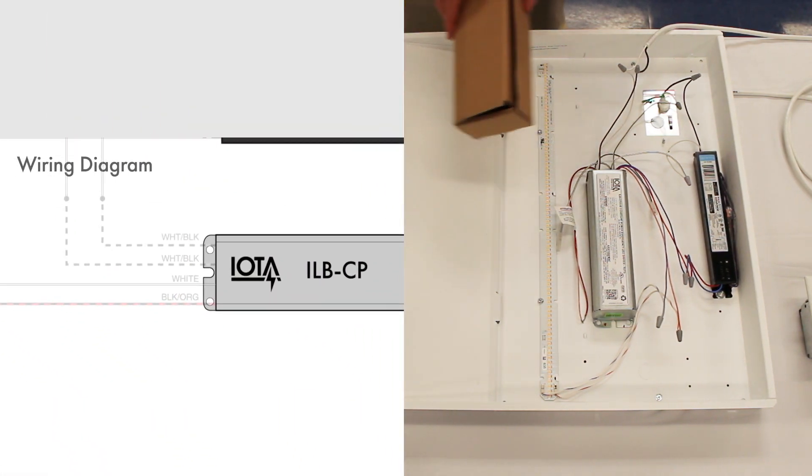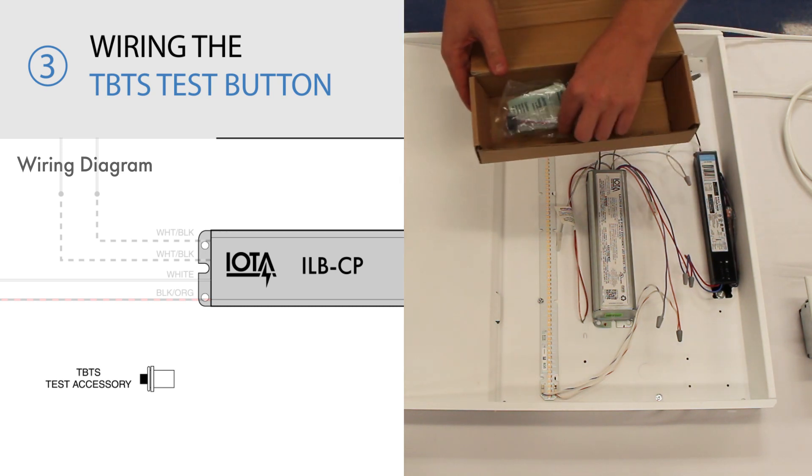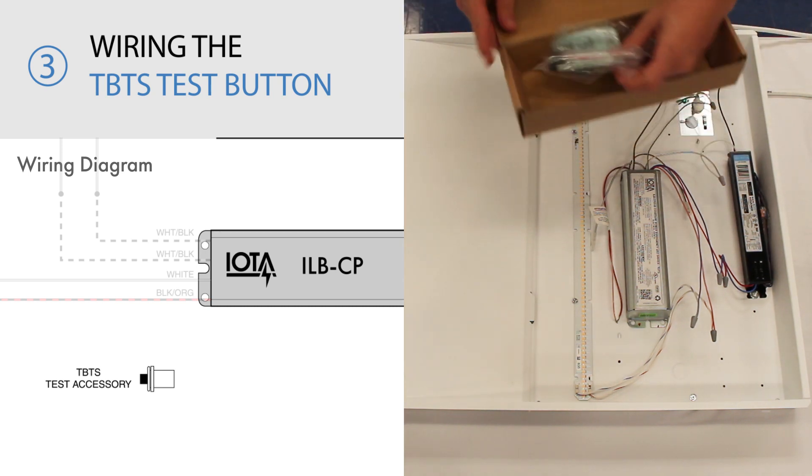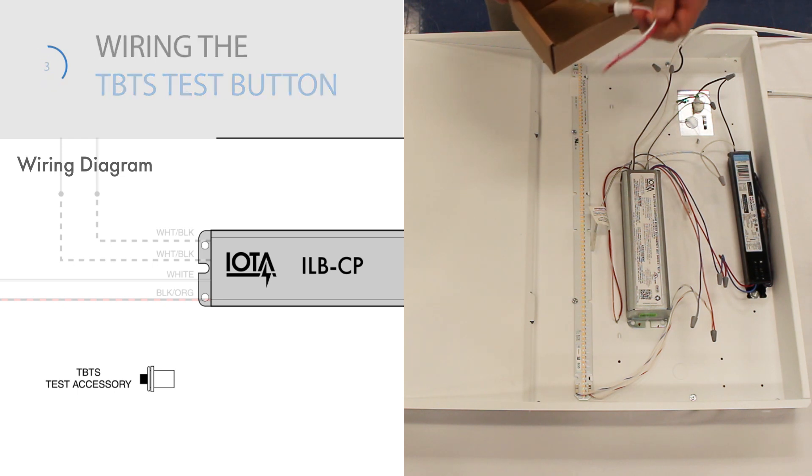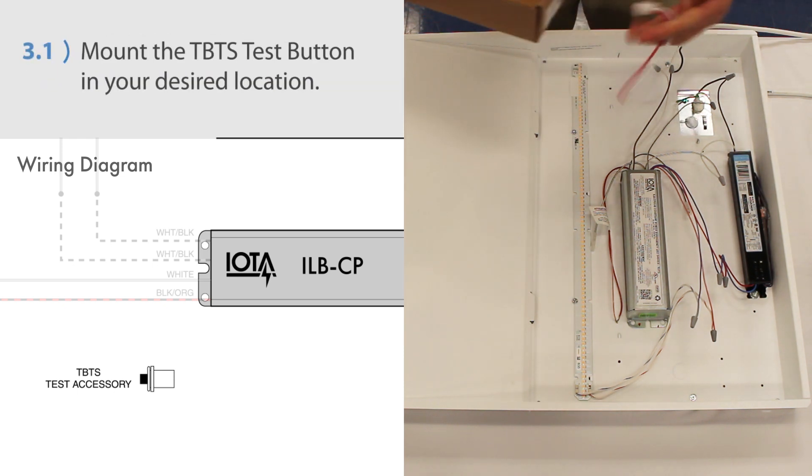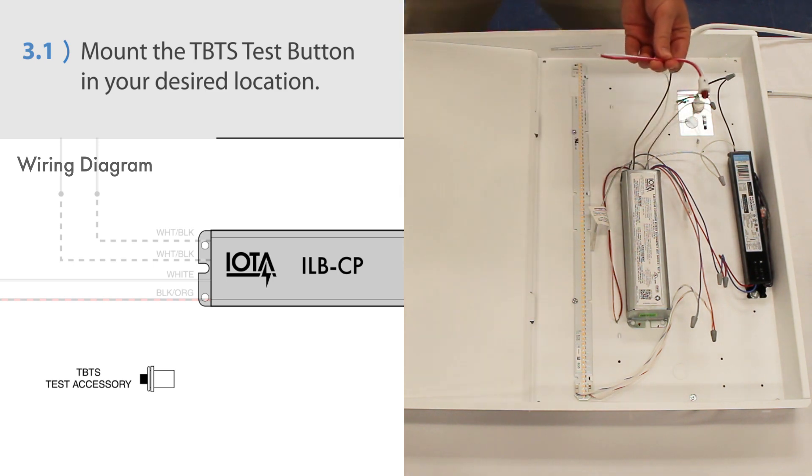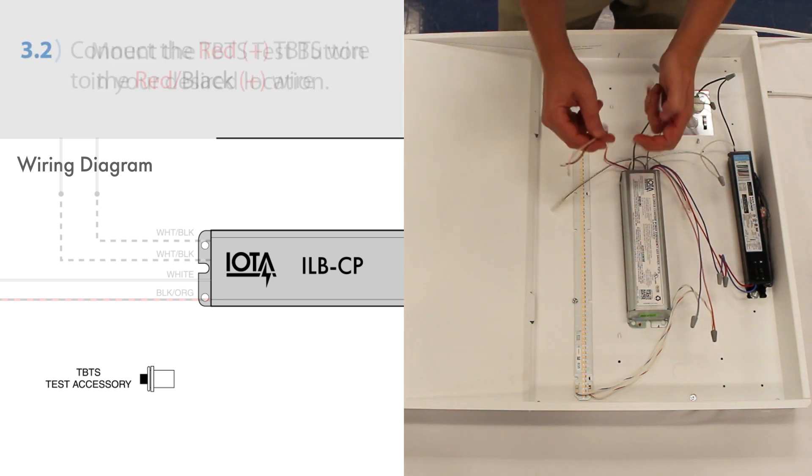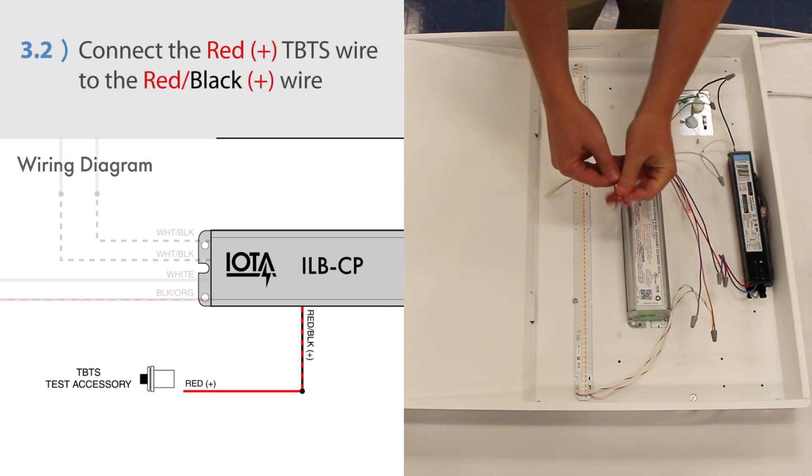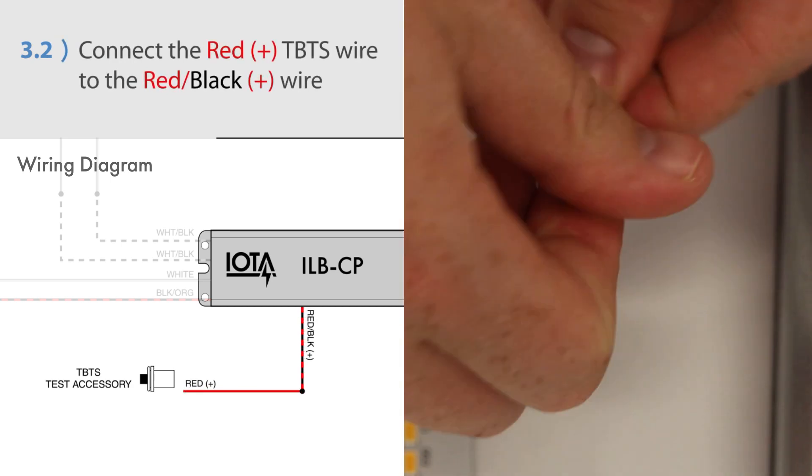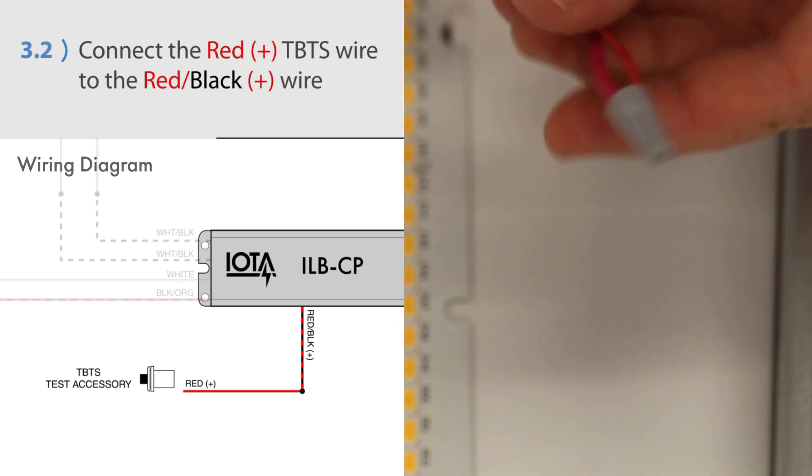The next step will be to connect the TBTS test button. Remove the TBTS from its packaging and mount it in the desired location where it will be visible and accessible for testing. Again, this location will depend on your application. Then connect the red positive wire from the TBTS to the red-black positive wire from the ILB-CP.